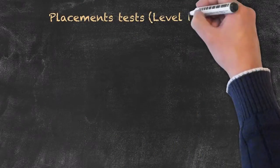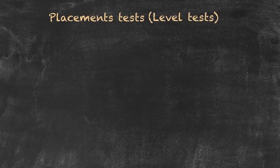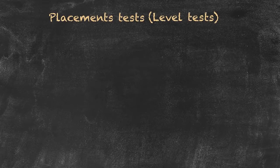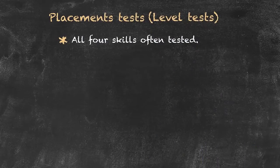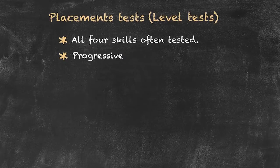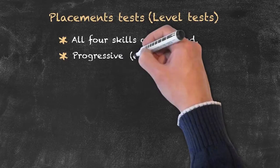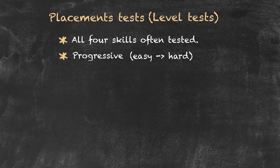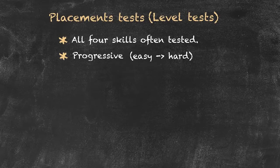Our first type of test is called the placement test — often also called level tests. As the name implies, what we're trying to do is to place students in a particular level of class. Some of the more common features of these are that all four skills are commonly tested: reading, writing, speaking, and listening. And they tend to be what's called progressive, meaning the questions start easy and gradually become harder and harder, so not all students will get to the end of the test.